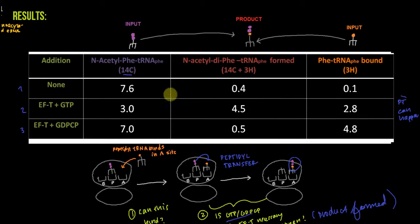Row three: we've added EF-T and GDPCP, the non-hydrolyzable analog of GTP. Let's see what happens when we use this non-hydrolyzable analog. First, we see a similar level of N-acetyl-Phe-tRNA-Phe binding as in the previous two rows, especially in row one when we didn't add anything. This corroborates that neither GDPCP nor EF-T is necessary for binding of N-acetyl-Phe-tRNA-Phe.